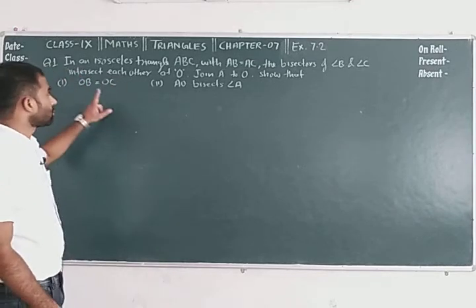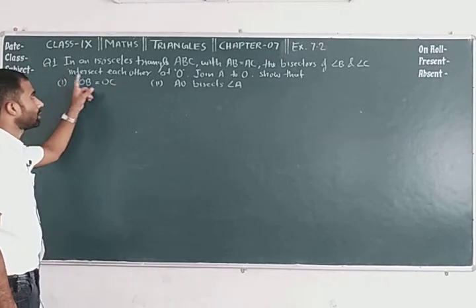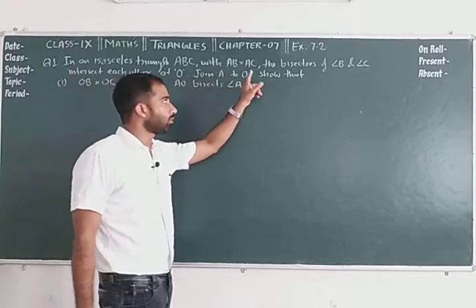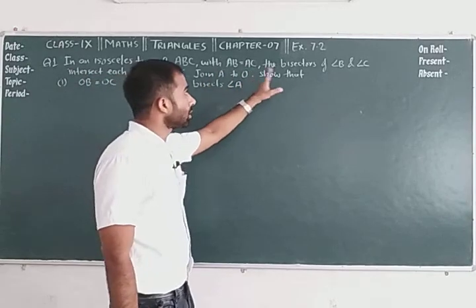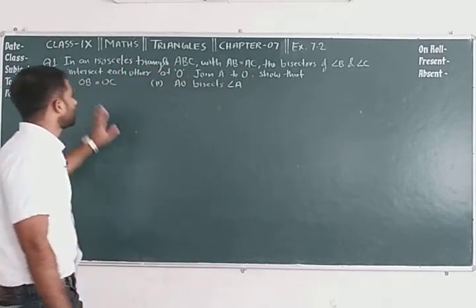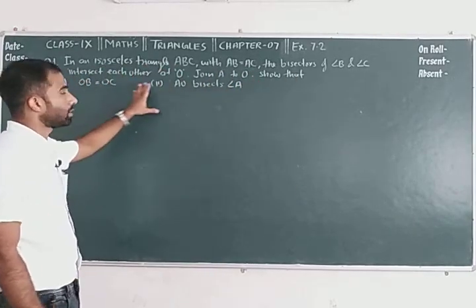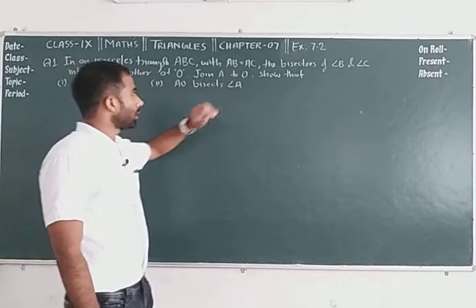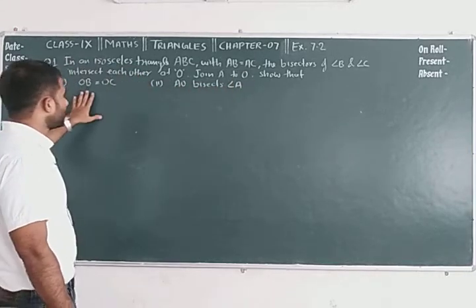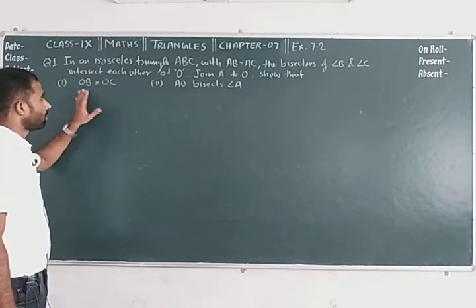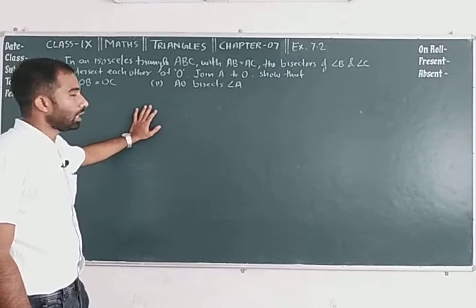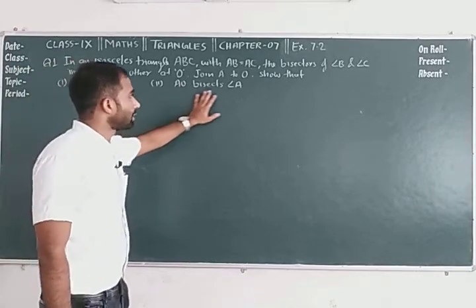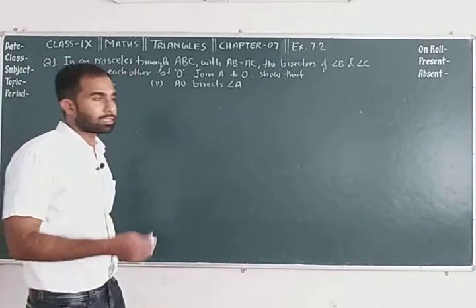The first question says: In an isosceles triangle ABC, side AB is equal to AC. The bisector of angle B and angle C intersect each other at point O. Join A to O. Show that OB is equal to OC, and second part is AO bisects angle A.